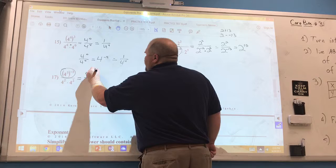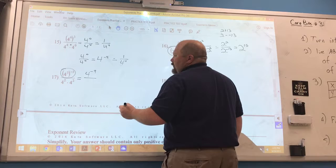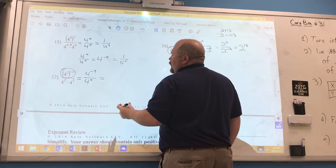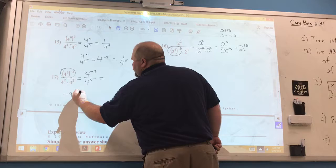Down here on the bottom we can go ahead and simplify this. This is multiplying like bases so we add the exponents. 4 to the 4th. Now we've created a new problem. It's a dividing like bases problem and that's going to be negative 9 minus 4.